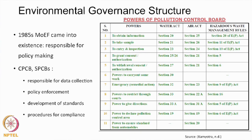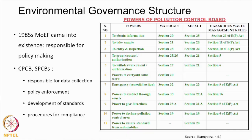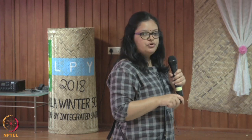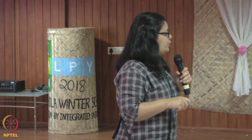Until 1985 there was no ministry at the central level — only a Department of Environment. In 1985, the Ministry of Environment and Forests (MOEF) was established, and under it the Central Pollution Control Board and State Pollution Control Boards were formed with responsibility for data collection, policy implementation, standard formation, and regulation. These are the particular powers of pollution control boards.